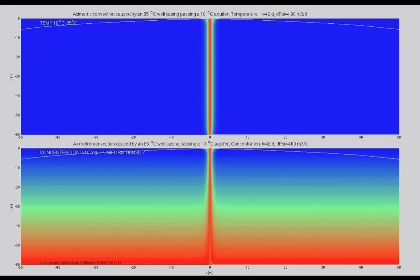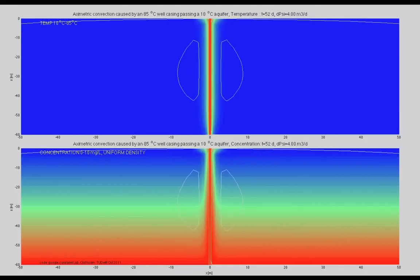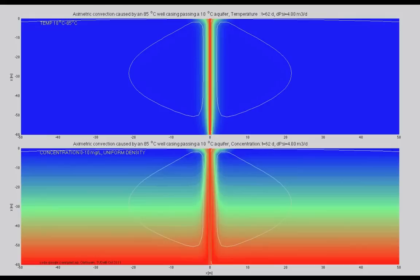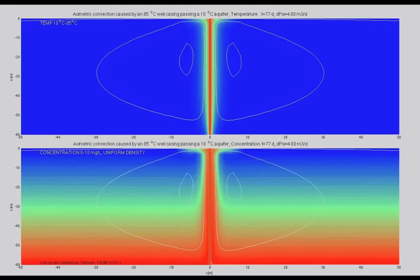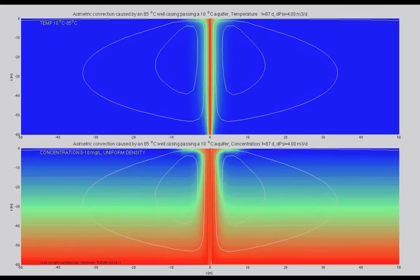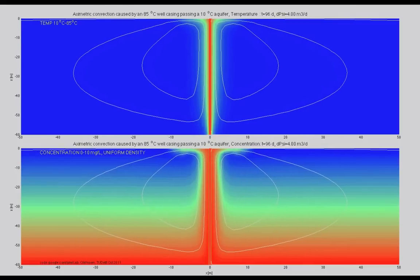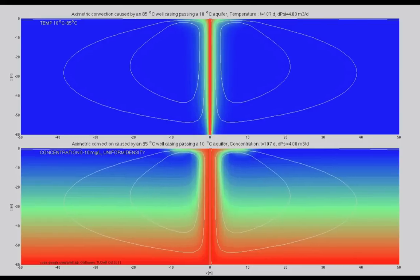A hot casing unavoidably heats up the groundwater adjacent to it, making it less viscous and also lighter by thermal expansion. This lighter groundwater starts flowing upward along the pipe, a process called convection.